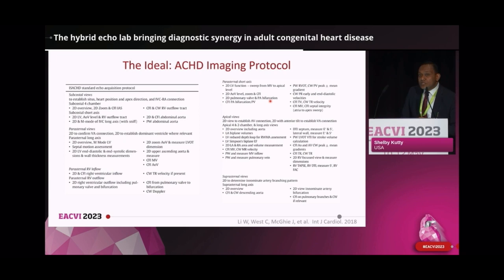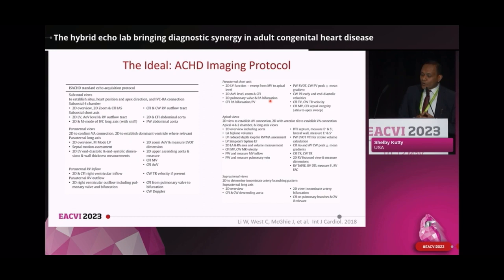Effective ACHD imaging depends on a successful synergy. The International Society for Adult Congenital Heart Disease has proposed an imaging protocol that's elaborate and comprehensive — it starts with subcostal views, includes many quantitative techniques, and is a nice synthesis of many of the things we have been discussing. Ultimately, a hybrid echo protocol is the ideal we aspire to, but how we get there depends on where we are now. Some of us are based in pediatric facilities, others in adult hospitals, so let's take a look briefly at the road forward from each of these perspectives.